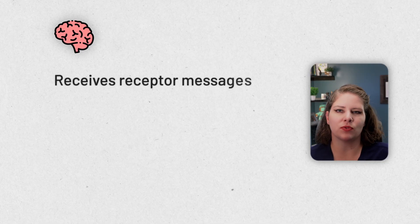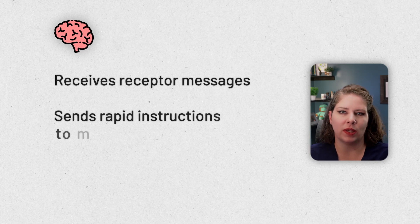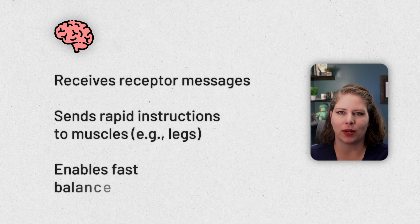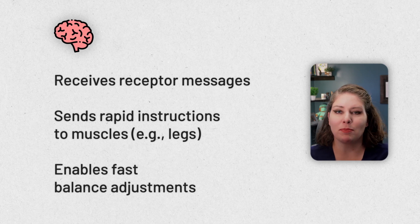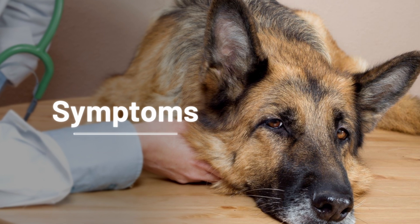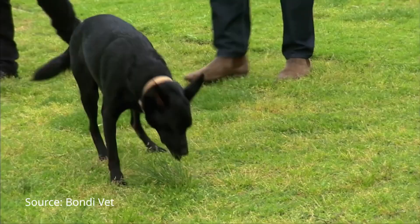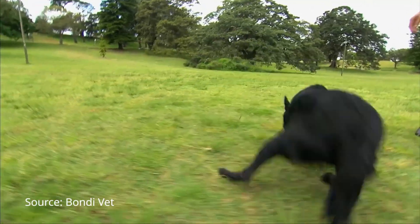After your cat or dog's brain receives the messages from these receptors in the middle ear, the brain sends out information to the body — like the legs — in order for the body to respond to these messages. And it happens so fast. Now that you understand how the vestibular system works, you can understand that if any part of it is malfunctioning, your pet is likely to feel unsteady, dizzy, nauseated, and they can even fall completely over.